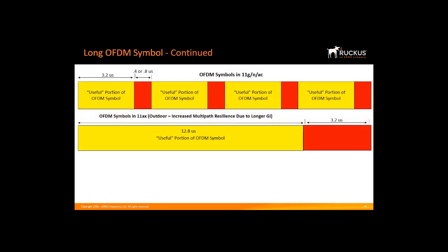The way we can make it work is by looking at the bottom graph. Here, we quadruple the duration of the red portion. Instead of 0.8 microseconds, it is now 3.2 microseconds, which means it can tolerate reflections coming from a much larger distance. The yellow portion has been increased four-fold to 12.8 microseconds, which gives a lot of outdoor multipath tolerance and keeps the overhead the same. The yellow and red portions consist of one OFDM symbol. This increase in size is called the long OFDM symbol. As a result, it's better for outdoor deployments, meaning you can now mount your APs at a much taller height to cover a wider area.